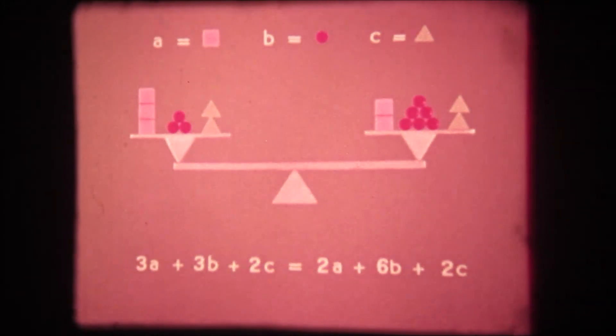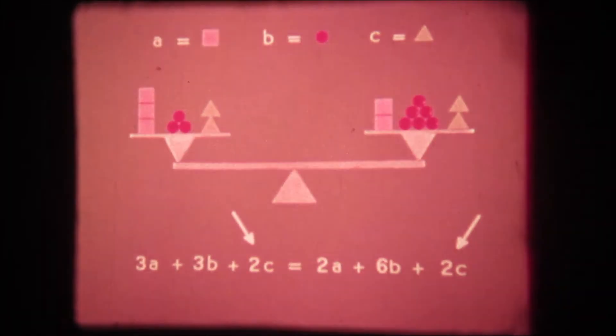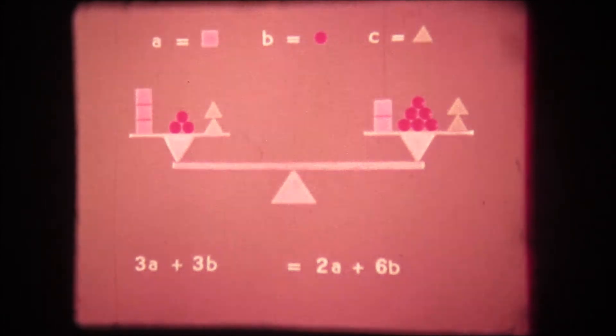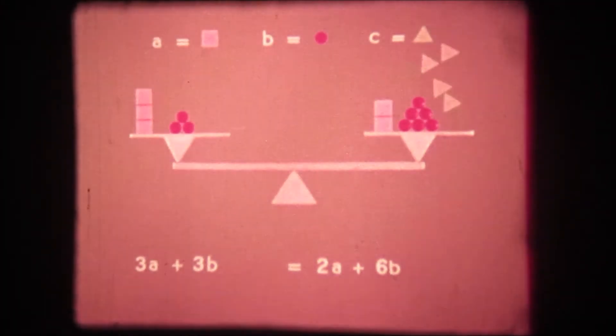We notice immediately that there is a quantity two C on each side of the equation. If we subtract the same amount from each side of the equation we will not upset the balance. This makes C disappear from the equation entirely which tells us that this equation is going to give only the relationship between A and B.